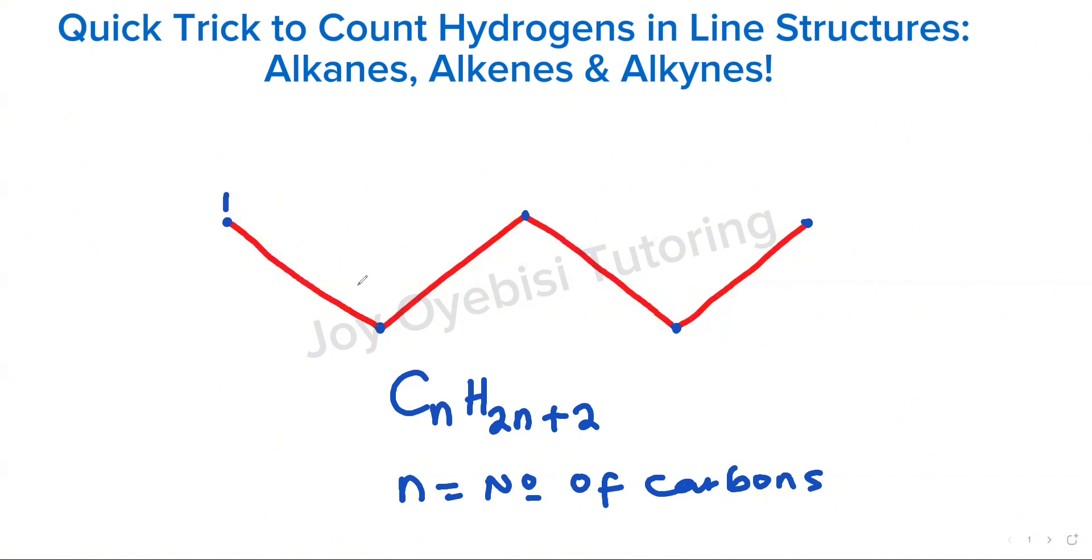Now, this is 1, 2, 3, 4, and then 5, which means my n is equal to 5. n is the total number of carbons. So I have 5 carbons in this compound. So now we know the number of carbons.